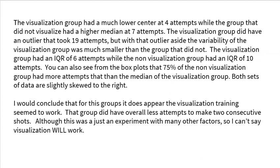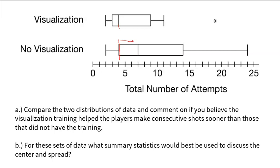I would conclude that for these groups, it does appear that visualization training seemed to work — that group overall had fewer attempts to make two consecutive shots, although this was just an experiment with many other factors. For part B, because both groups were somewhat skewed to the right, I would use the median and the IQR to describe the center and spread. When you're skewed to the right, you'd rather use the median and the IQR to represent the data.